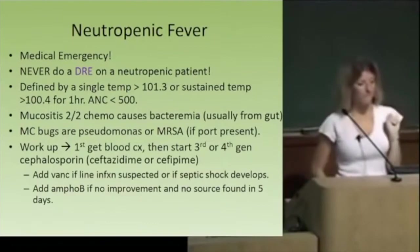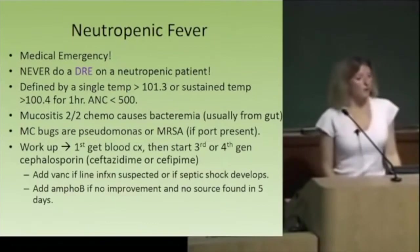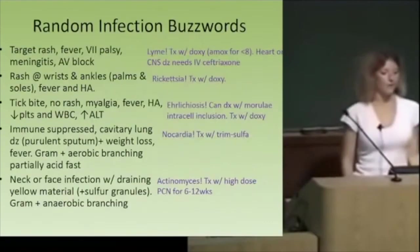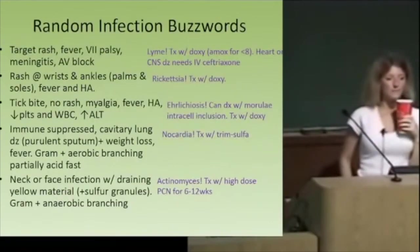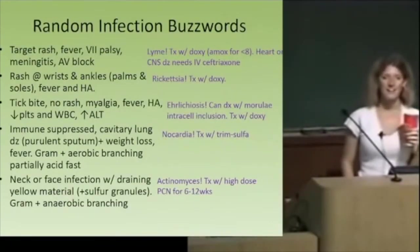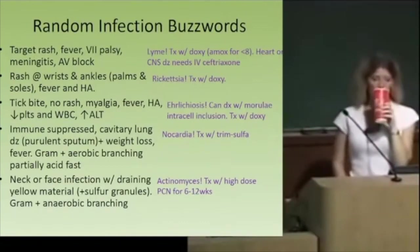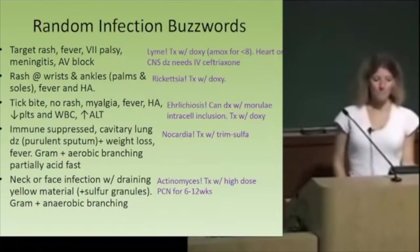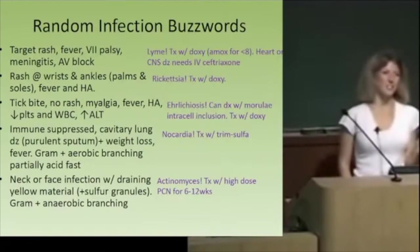Lyme disease can present with targetoid rash, fever, cranial nerve seven palsy, meningitis, and AV block. Treat with doxycycline. For a six-year-old kid, use amoxicillin instead — kids can't have doxy for Lyme.